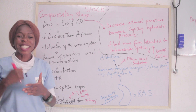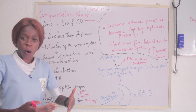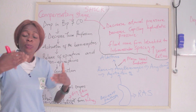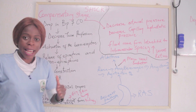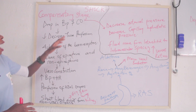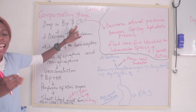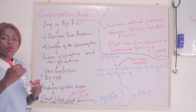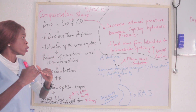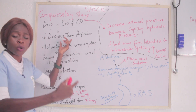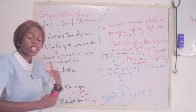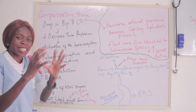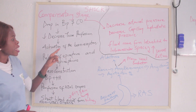That takes us to the second stage of shock, which is the compensatory stage. As the name implies, the body is trying to compensate and rescue itself from further damage. At that moment, there is a drop in blood pressure and cardiac output, which leads to decreased tissue perfusion — the tissues are not going to be getting enough blood or oxygen. Once that happens, the body notices and activates the baroreceptors.